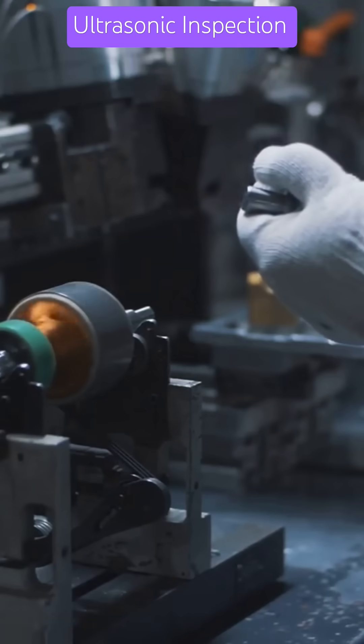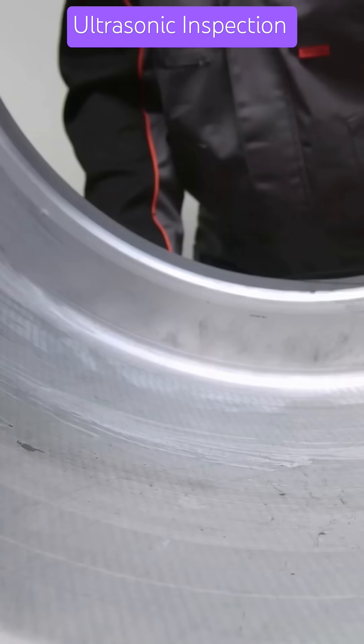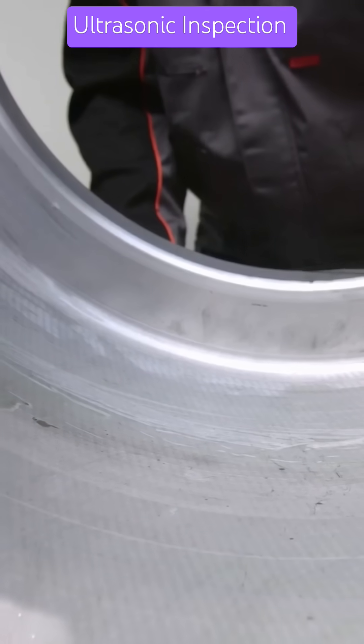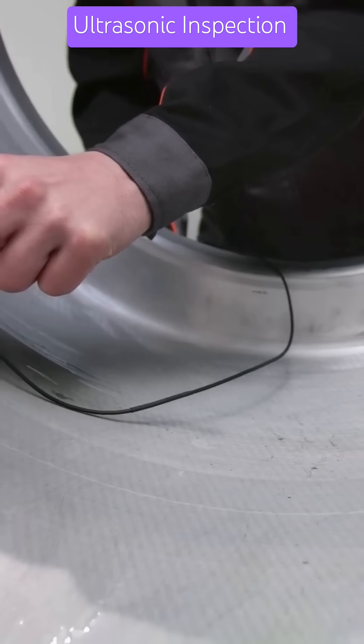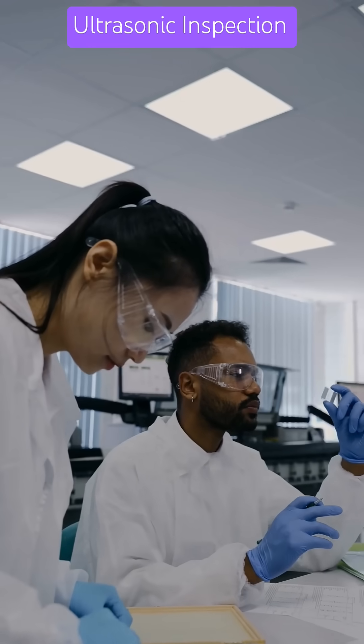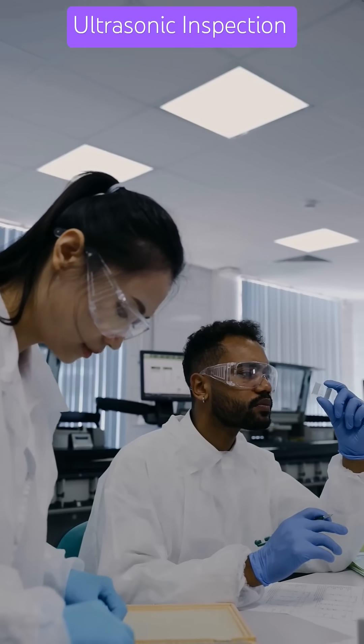It is precise, fast, and does not damage the part. It is used in turbine blades, landing gear, fuselage joints, anywhere internal damage can cause catastrophic failure. Ultrasonic inspection helps keep planes airworthy, safe, and compliant.